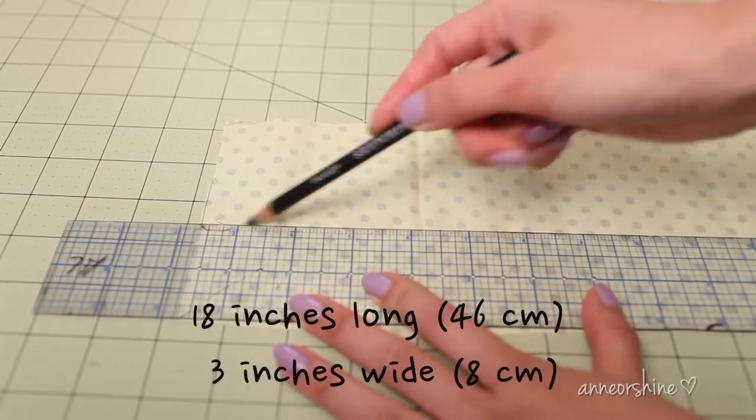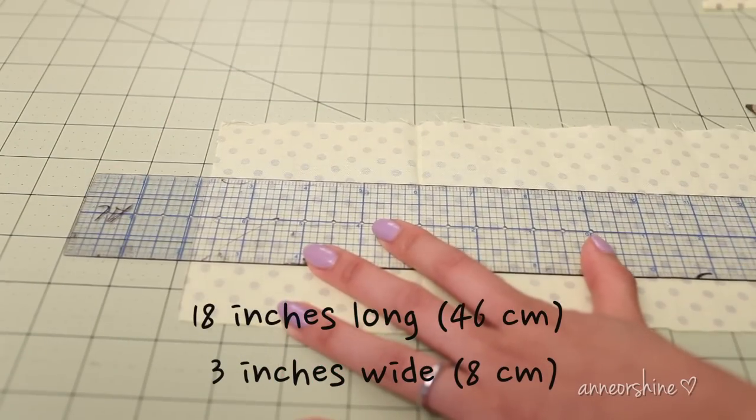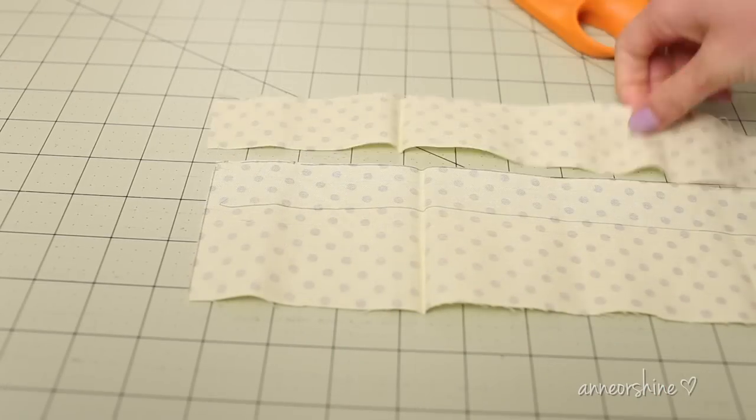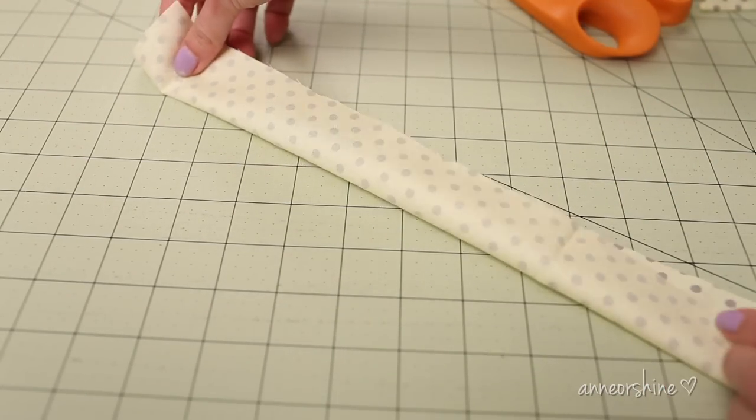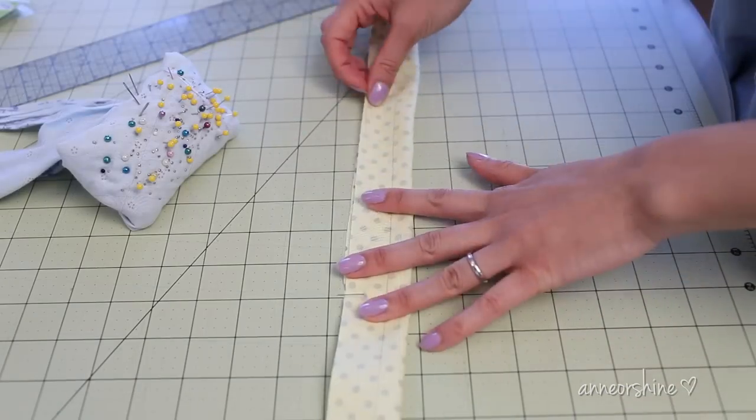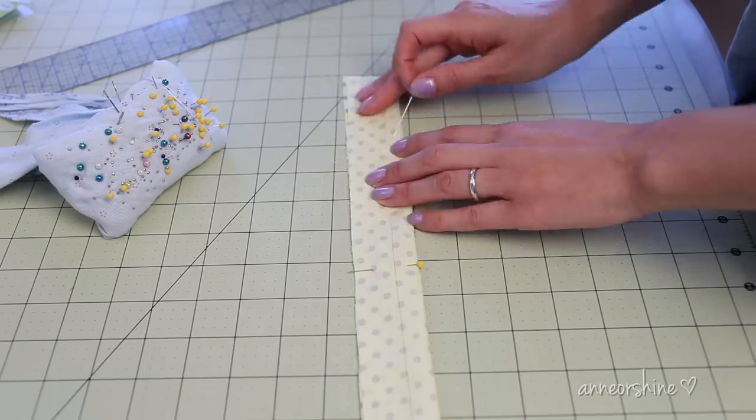Okay, so take out your fabric and cut an 18 by 3 inch rectangle. Next, fold it in half the long way with the wrong sides facing out. If you're sewing this, then pin it throughout the fold.